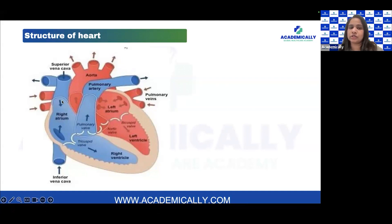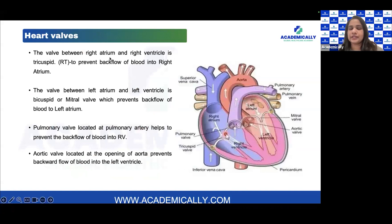The right side of the heart is mainly responsible for the movement of deoxygenated blood, whereas the left side is responsible for oxygenated blood. The tricuspid valve between the right atrium and right ventricle prevents backflow to the right atrium. The bicuspid or mitral valve between the left atrium and left ventricle prevents backflow to the left atrium. There are also two more valves: the pulmonary valve and the aortic valve.